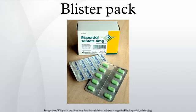Blister pack is a term for several types of preformed plastic packaging used for small consumer goods, foods, and for pharmaceuticals. The primary component of a blister pack is a cavity or pocket made from a formable web, usually a thermoformed plastic. This usually has a backing of paperboard or a lidding seal of aluminum foil or plastic. A blister that folds onto itself is often called a clamshell.